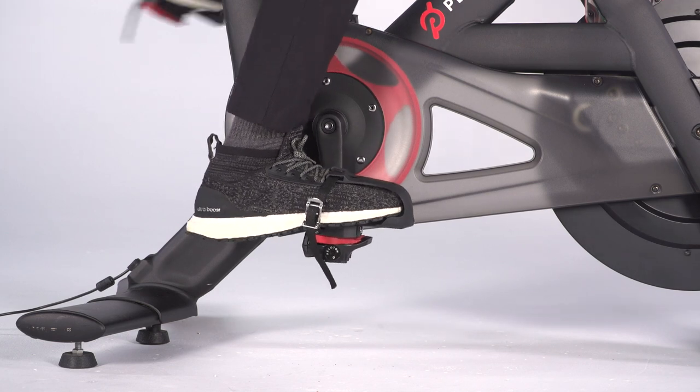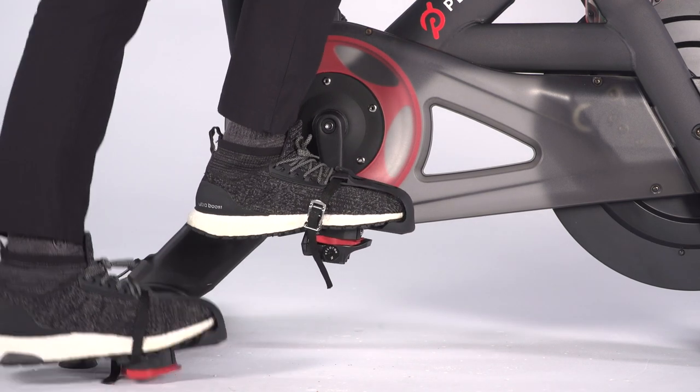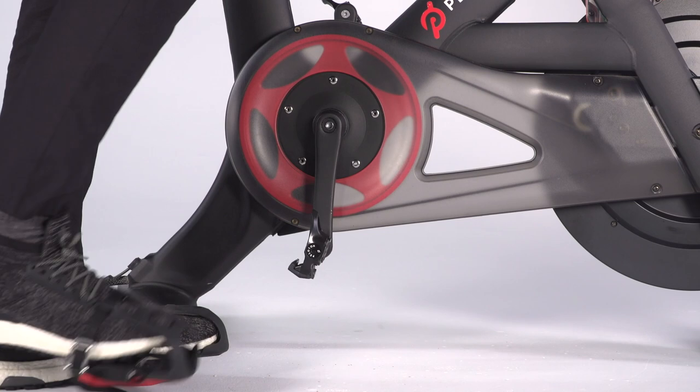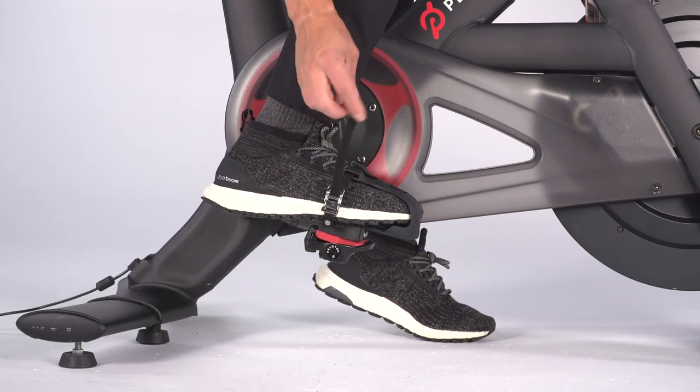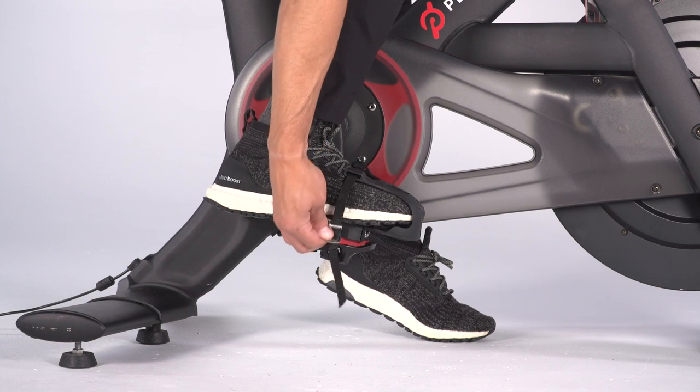Clip out by holding down the resistance knob and kicking your heel away from the bike. You can also unthread the strap, press down on the buckle to loosen it, and slip your foot out of the toe clip, leaving the clip attached to the pedal.